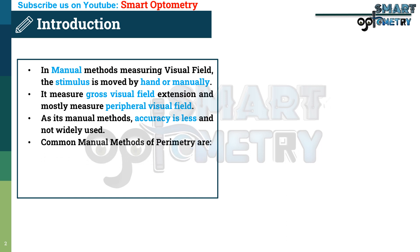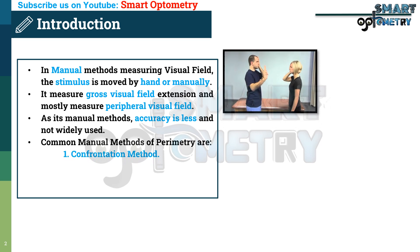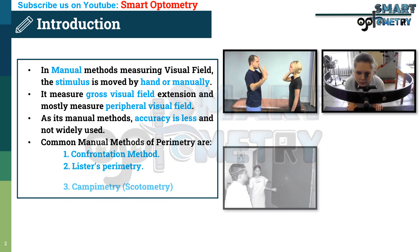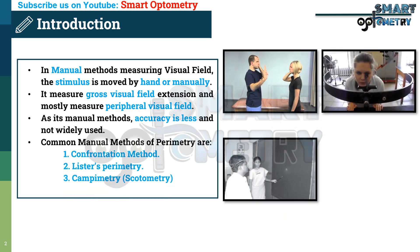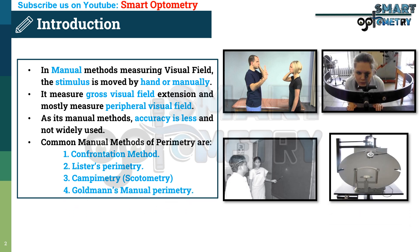Common methods of manual perimetry are: Confrontation Method, Lister's Perimetry, Campimetry or Scotometry, and Goldman's Manual Perimetry.